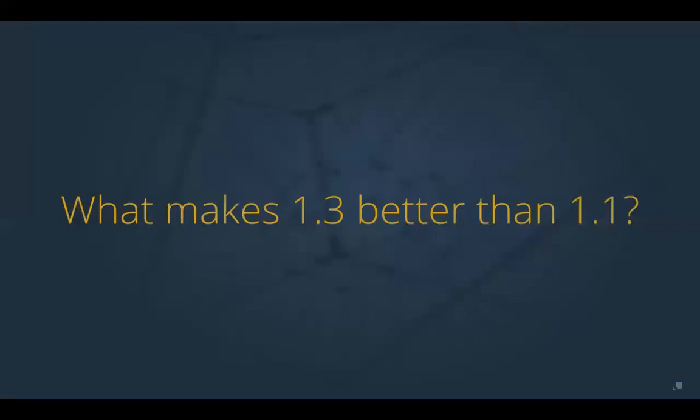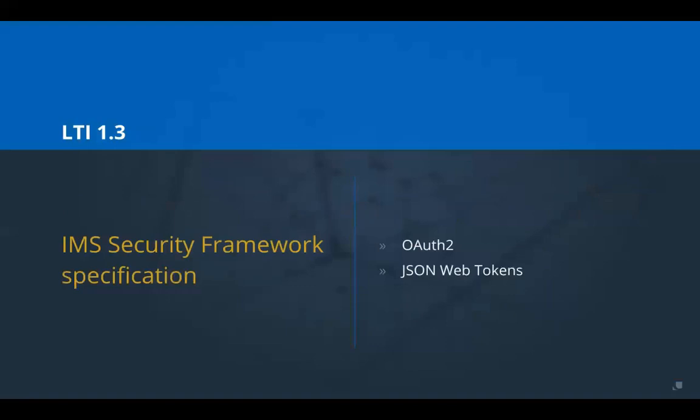So what makes 1.3 better than 1.1? There are a few reasons for this recommended upgrade path. One of the major reasons is the modernized security model, and the other is the idea of having different services layered on top of the core LTI launch mechanism, which allows a new set of richer interactions between tools and platforms. In 1.3, IMS moved the security framework into a separate model so that current and future LTI specifications can be updated independently of the security model.